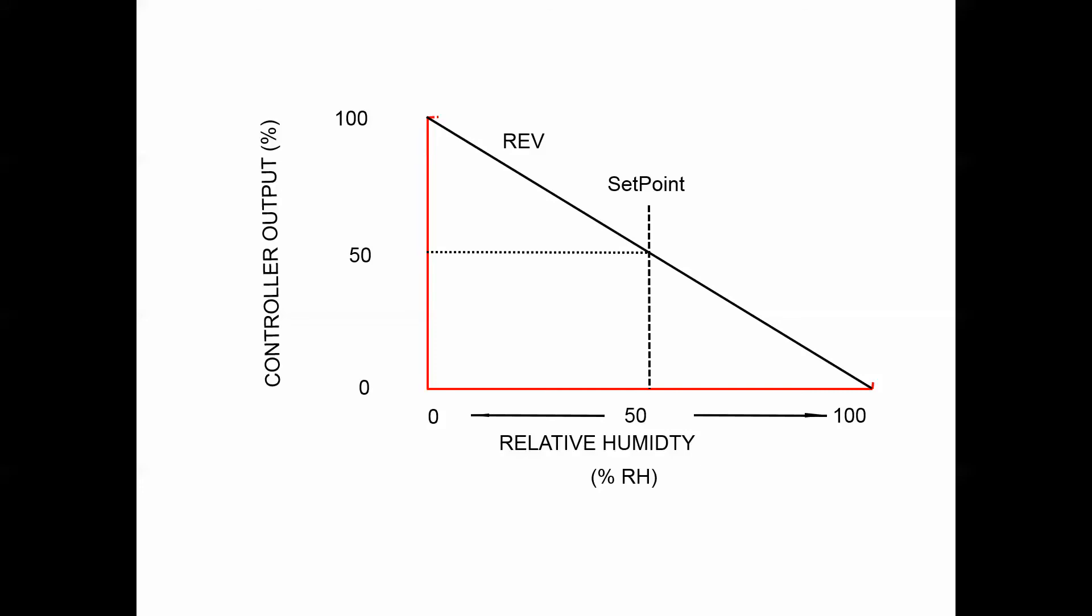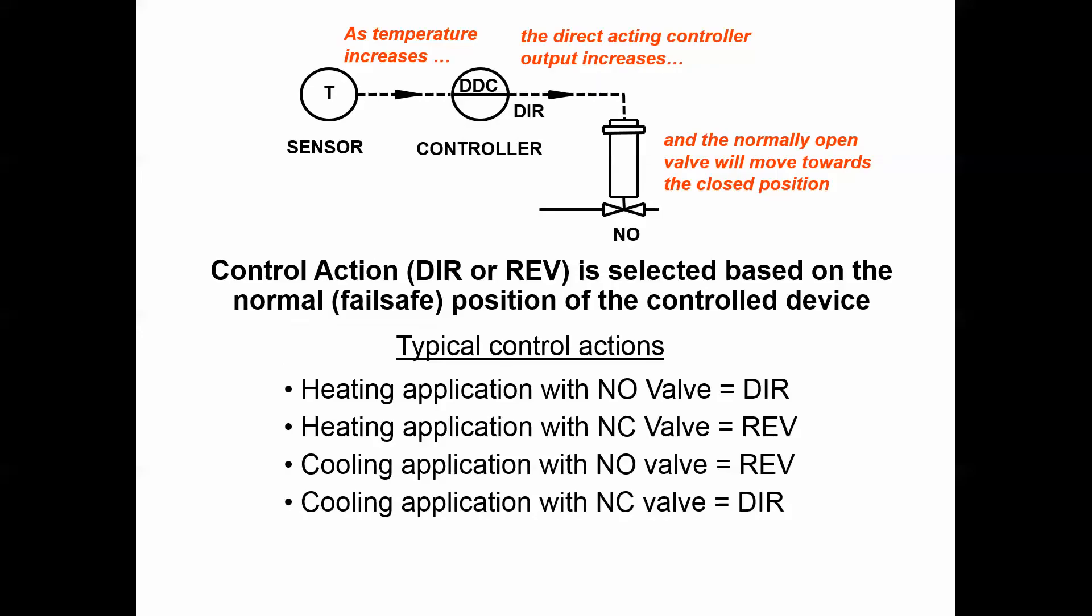Why is that important? You may notice on some of our control drawings we'll see notation like this that indicates where you have a direct acting control signal and something like a normally open control valve. As an example, if you have a heating valve and you want it to fail open to prevent some type of freezing condition or occupant discomfort, when you select a normally open valve you're selecting a valve that has a spring assembly such that a control output is going to take that valve position away from that normally open - it's going to start closing it.